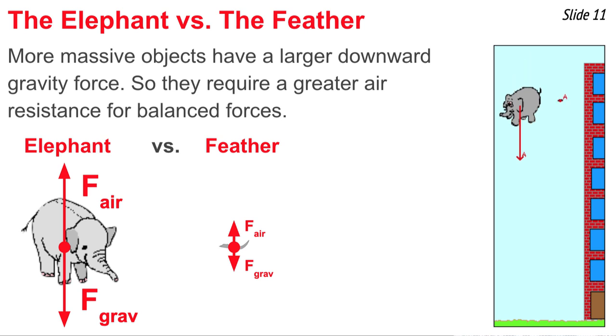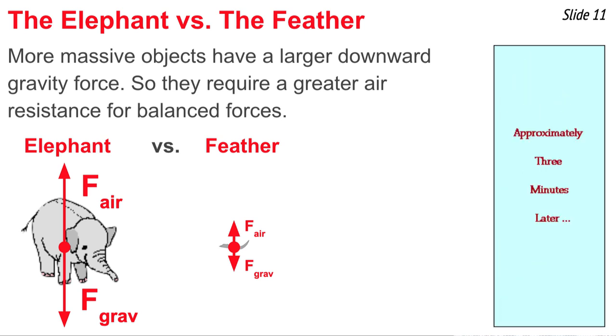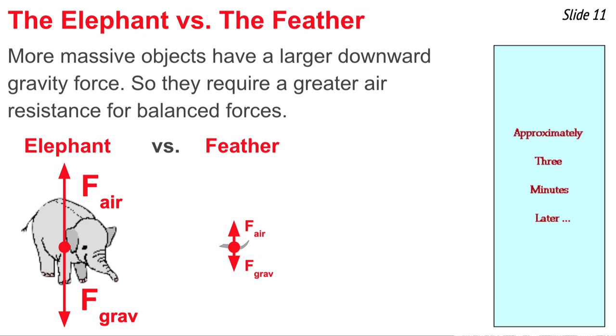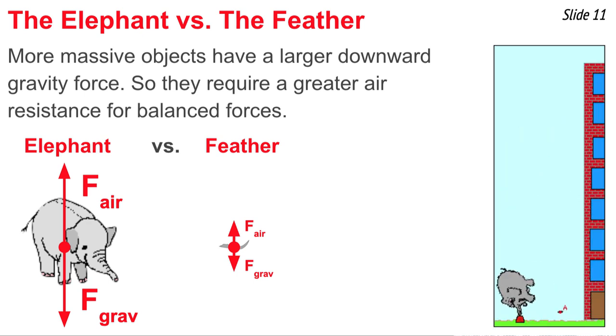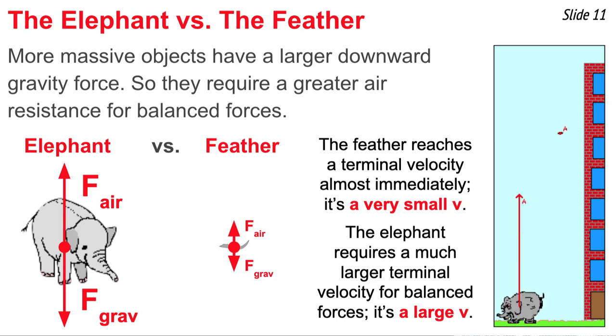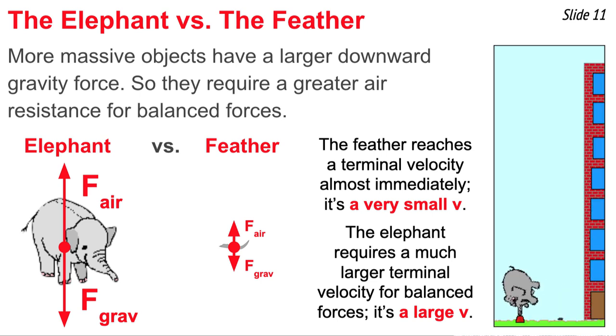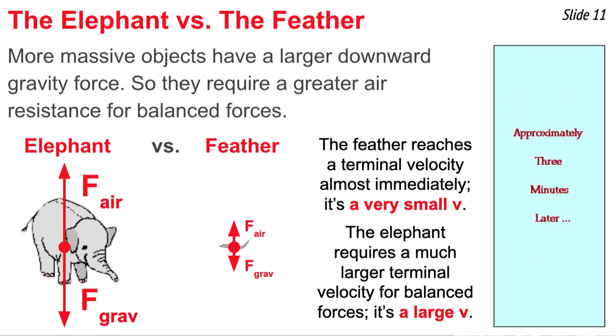To understand the effect of mass upon terminal velocity, let's consider two extreme cases of mass, like an elephant and a feather. The more massive elephant has a larger downward force of gravity, and because it does, it requires a greater air resistance force in order to bring it to a terminal velocity. The feather reaches terminal velocity almost immediately due to the fact that it doesn't need much air resistance force. But an elephant must accelerate faster and faster in order to get enough air resistance force to balance its downward force of gravity. The result is that the more massive elephant has a greater terminal velocity in order to reach this balanced force state.